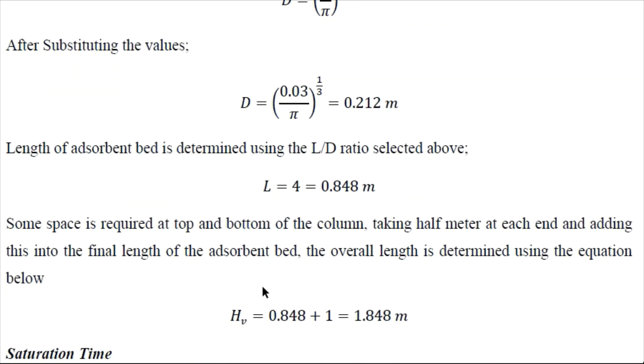So we basically add some space at the top and bottom of the bed. So that is taken as 0.5 meter at the top and 0.5 meter at the bottom. So it becomes total height of the vessel as 1.848.